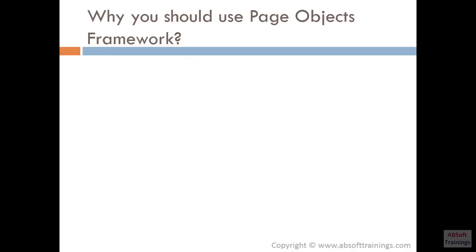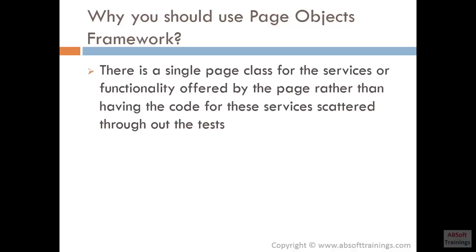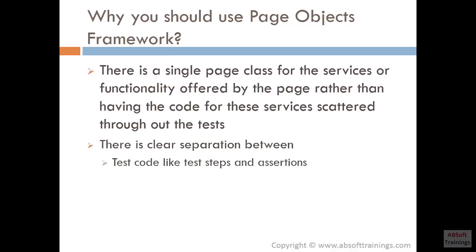Let's see why you should use Page Objects Framework — there are a number of advantages. First, there is a single page class for the services or functionality offered by the page, rather than having the code for these services scattered through our tests. We are sticking to one page class to have all the code for that page. Additionally, with Page Objects Framework there is a clear separation between our test code — like test steps and assertions — and page-specific code like page functionality and locators.